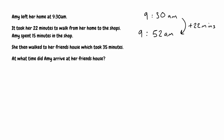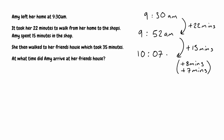We're then told that Amy spends 15 minutes in the shop, so we now want to add on 15 minutes. We can see that adding those 15 minutes is going to take us past 10 o'clock. So we want to see how many minutes it takes to get to 10 o'clock. We're currently at 9:52am, so we only need 8 more minutes to reach 10 o'clock. But we needed to add 15 minutes in total, so we've already added 8, meaning we need to add a further 7 minutes. Adding 7 minutes onto 10 o'clock takes us to 10:07am.